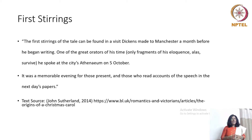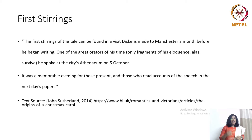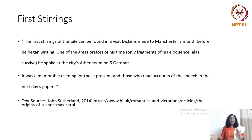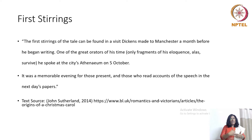The first stirrings of the tale can be found in a visit Dickens made to Manchester a month before he began writing. One of the great artists of his time, only fragments of his eloquence have survived. He spoke at the city's Atheneum on 5 October. It was a memorable evening for those present and those who read accounts of the speech in the next day's papers. Dickens was a great orator with eloquent speaking skills, and those who listened to his speech were much impressed by the nature of truth and the rhetoric with which he communicated to the audience.